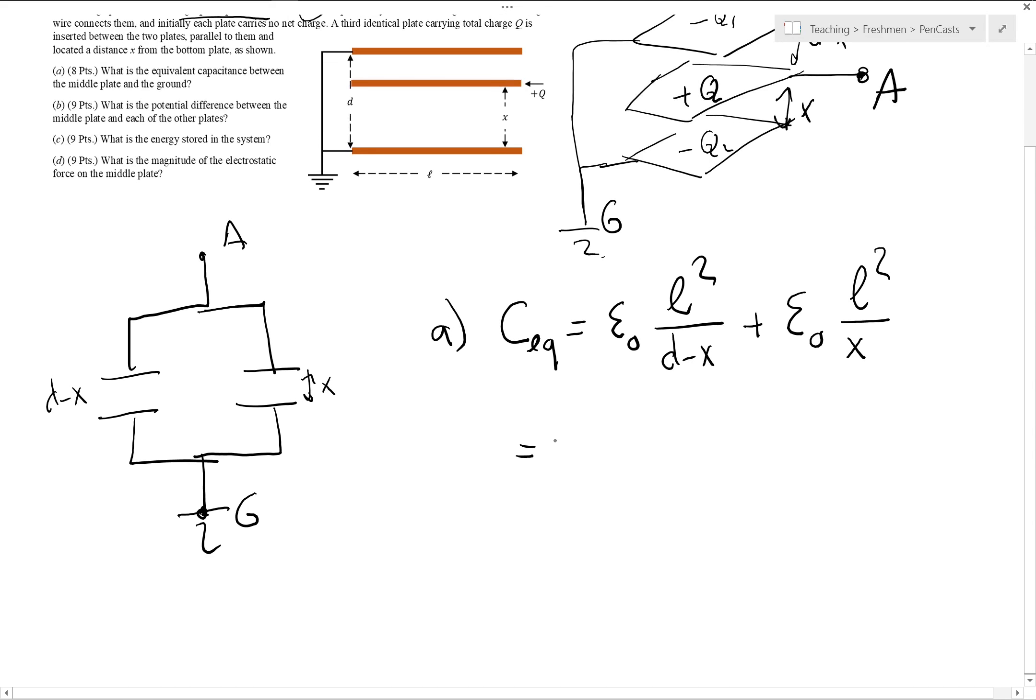So all in all, what does that give me? Epsilon 0, L squared, 1 over D minus X plus 1 over X. That gives me epsilon 0, L squared, D minus X plus X gives me D divided by X times D minus X.